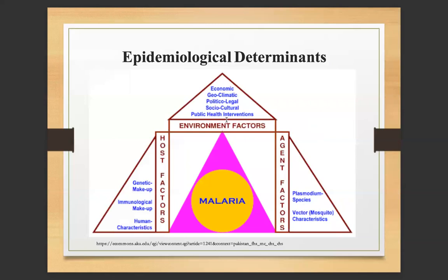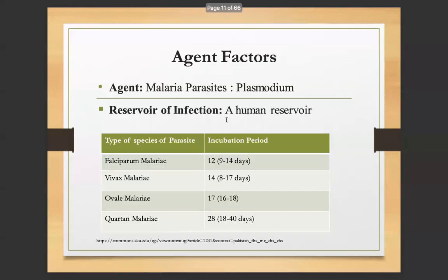Epidemiological determinants are divided into three categories: environmental factors, agent factors, and host factors. Environmental factors include economic, geoclimatic, political, legal, socio-cultural, and public health interventions. Agent factors include the Plasmodium species, vector characteristics, and mosquito characteristics. Host factors include genetic makeup, immunological makeup, and human characteristics.